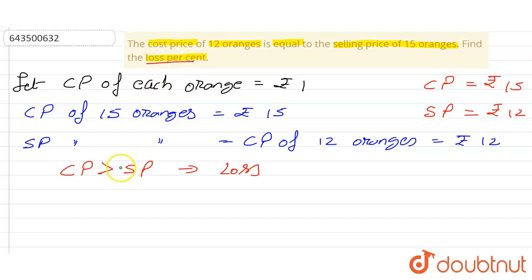So to find out the loss, we have to first find out how much is the loss. So how much is the loss here? The loss is equal to CP minus SP, which is equal to 15 minus 12, is equal to rupees 3.